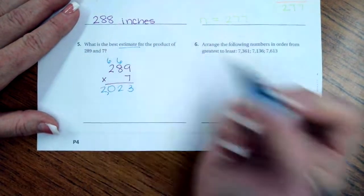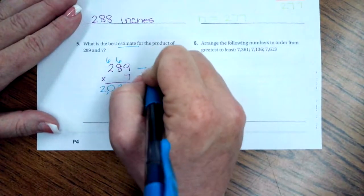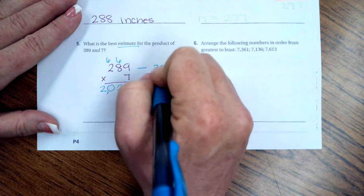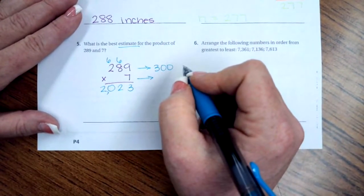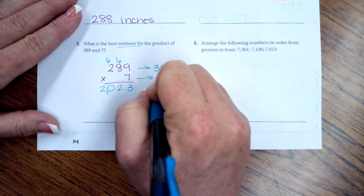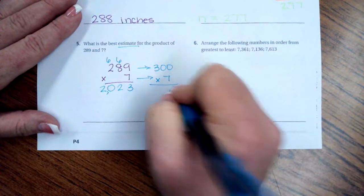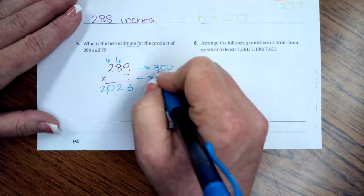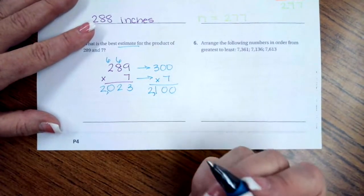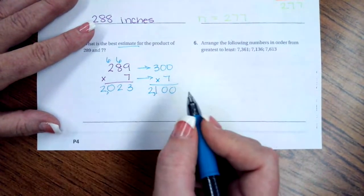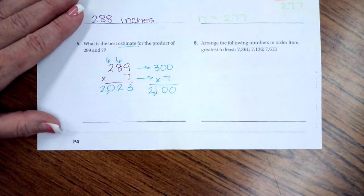Oh, but you know what? It says estimate. So, excuse Miss Leah for just a minute. And we're going to round 289 to 300. And we're going to keep 7 the way that it is. We don't have to round that one. So now, 7 times 0 is 0. 7 times 0 is 0. And 7 times 3 is 21. So, 2,100. So you've got your real answer and then your estimated answer. And it asks for the estimate.